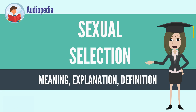Sexual selection is also found in plants and fungi. The maintenance of sexual reproduction in a highly competitive world is one of the major puzzles in biology, given that asexual reproduction can reproduce much more quickly as 50% of offspring are not males unable to produce offspring themselves. Many non-exclusive hypotheses have been proposed, including the positive impact of sexual selection on the probability of persistence of a species.